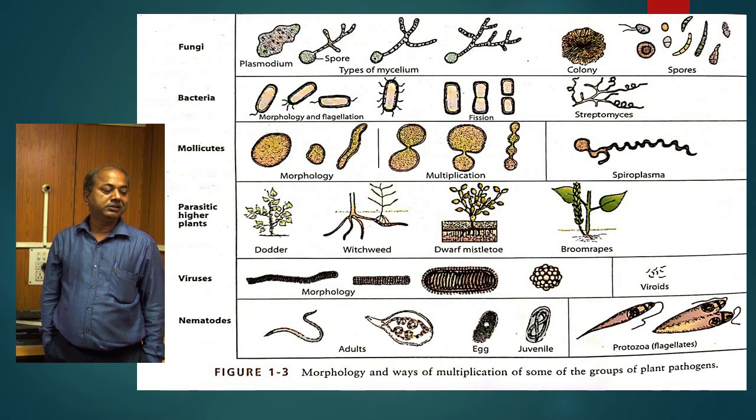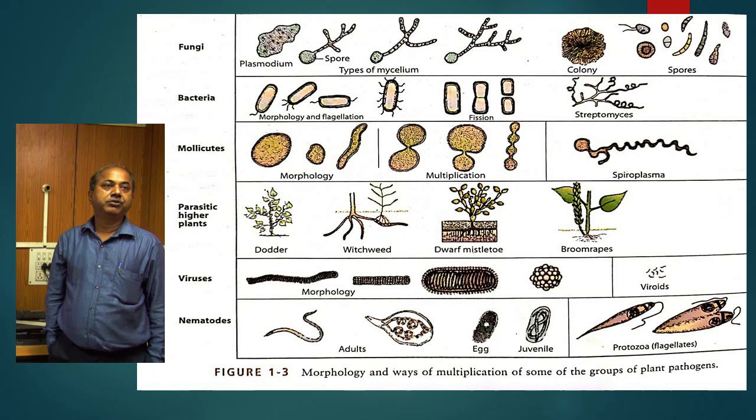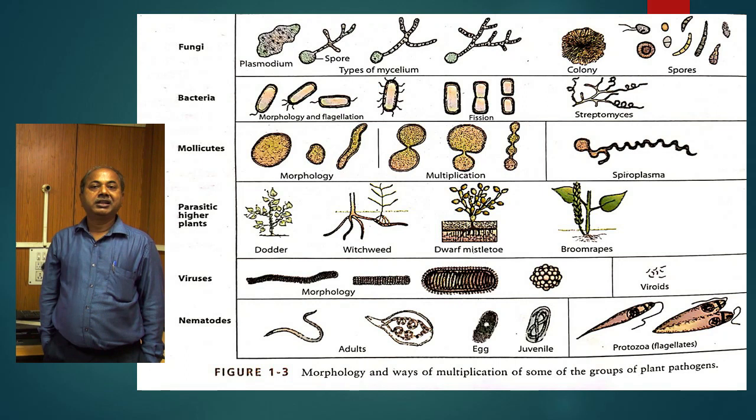In mollicutes, it is the Spiroplasma, then Phytoplasma. Then in higher plants, you all know about Cuscuta, then Dodder, then Orobanche. These are the higher parasitic plants which cause damage to plants.